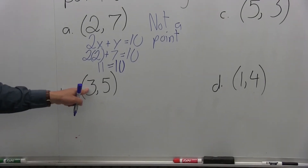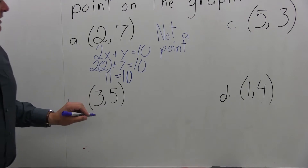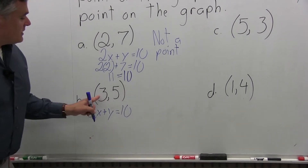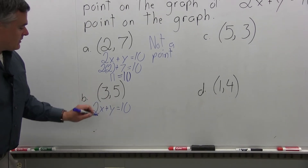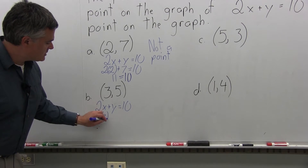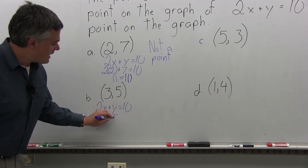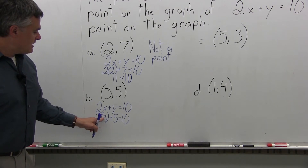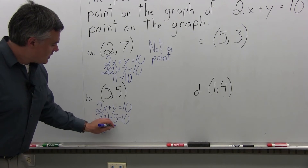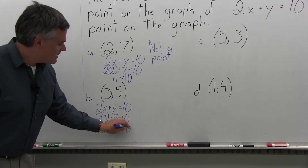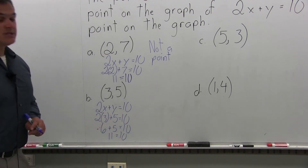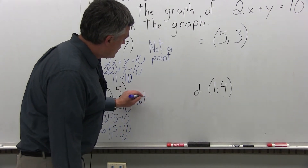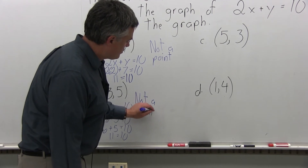Part B: determine if the point (3, 5) is a point on the graph of 2x plus y equals 10. Starting with the equation 2x plus y equals 10, putting in the x-coordinate 3, we get 2 times 3 plus 5. Two times 3 is 6, plus 5 more gives 11 on the left equals 10 — coincidentally the same as Part A. That is not true, so (3, 5) is also not a point on the graph of 2x plus y equals 10.